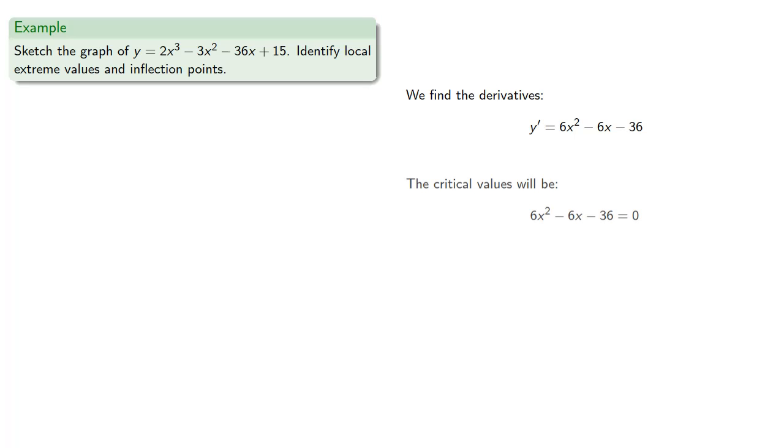Those are the things that make the derivative zero. And so we find x equals 3, x equals negative 2.